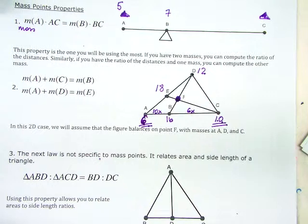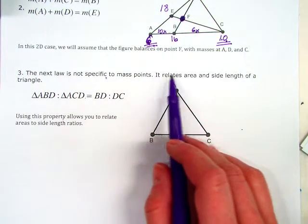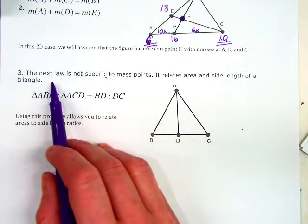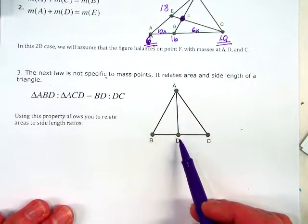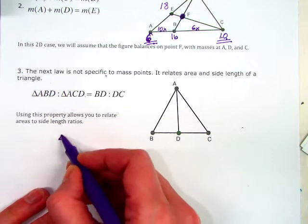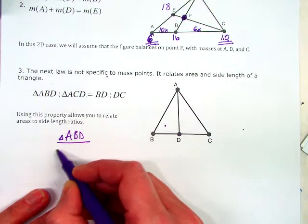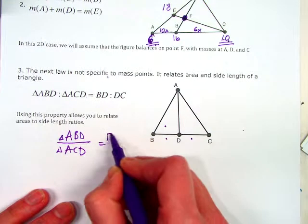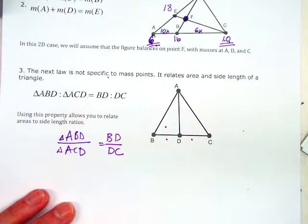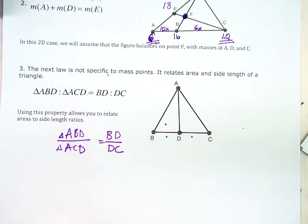And the last one - the next law is not specific to mass points, but it relates the area and side length of a triangle. Basically, if you have a triangle that's split with a segment, if you know the area of a certain triangle ABD, so like this side, divided by the area of triangle ACD, that's going to be the same as dividing BD over DC. That might come in handy. All right, now I'm done.